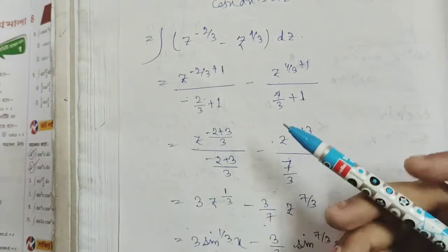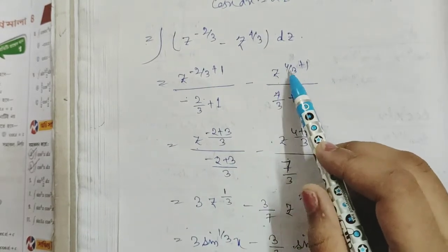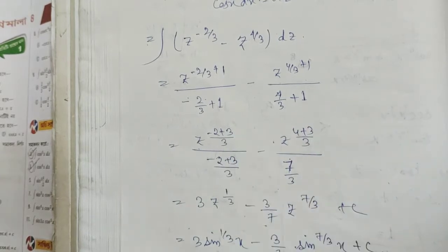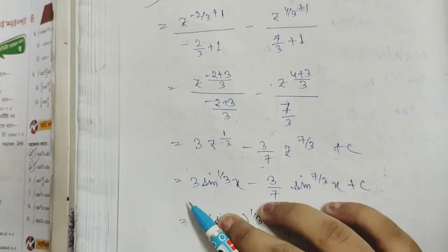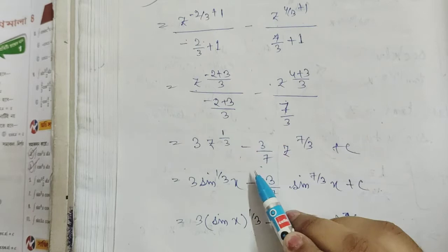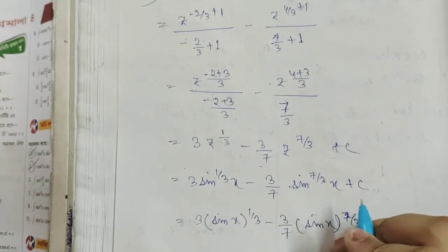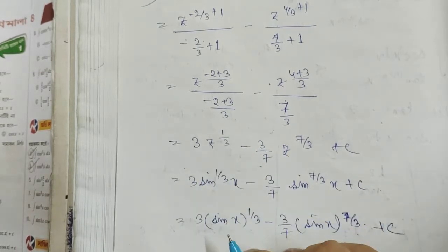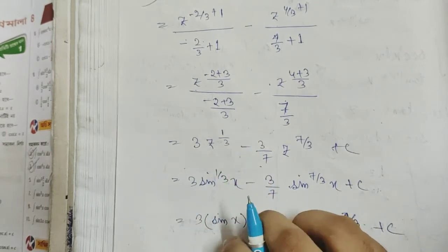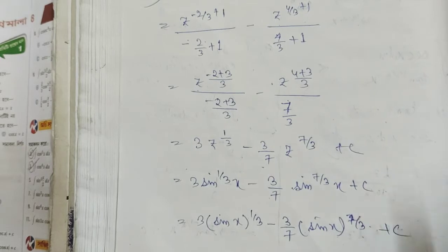So the formula gives us n plus 1: minus 2 by 3 plus 1 divided by minus 2 by 3 plus 1, minus z to the power 4 by 3 plus 1 divided by 4 by 3 plus 1. After calculation: 3 times z to the power 1 by 3 minus 3 by 7 times z to the power 7 by 3. Substituting back: 3 sin to the power 1 by 3 x minus 3 by 7 sin to the power 7 by 3 x plus c.